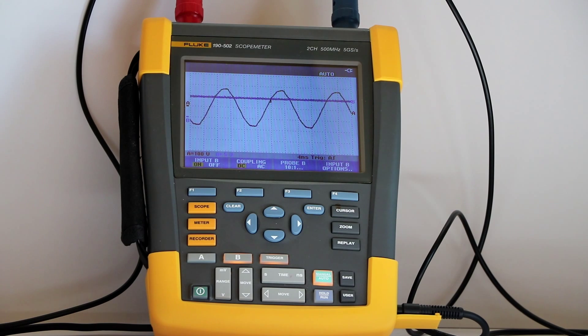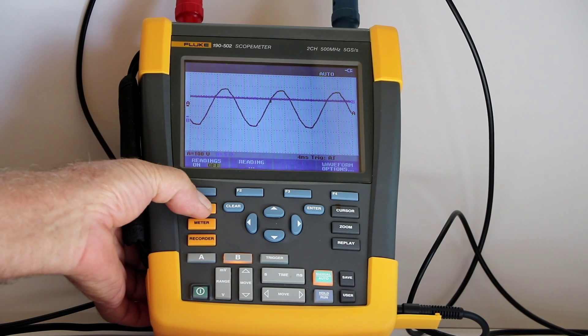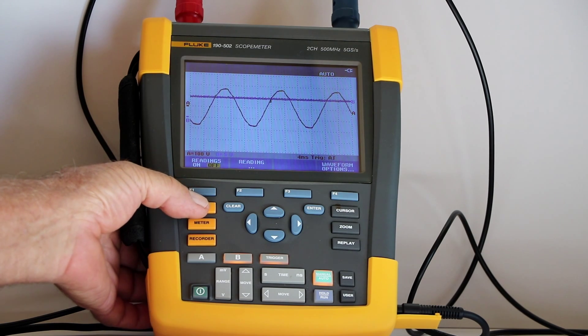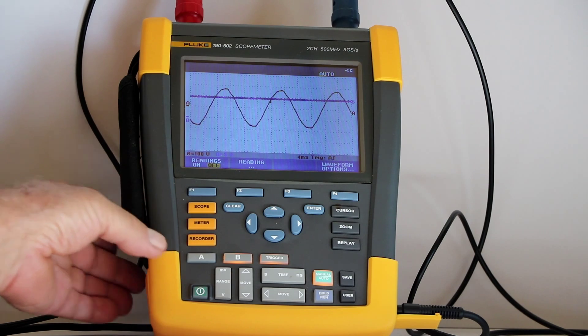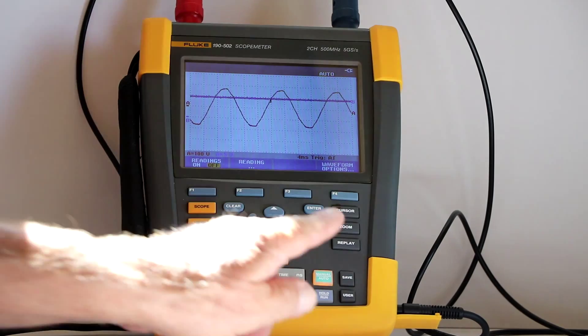We'll perform a math function. To begin, press scope to display the key labels. Then, as in many procedures, press F4 to open the waveform options menu.